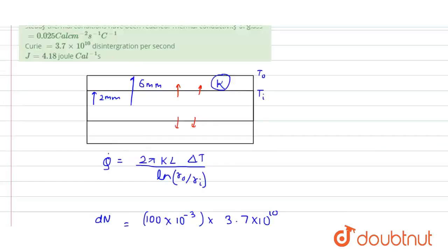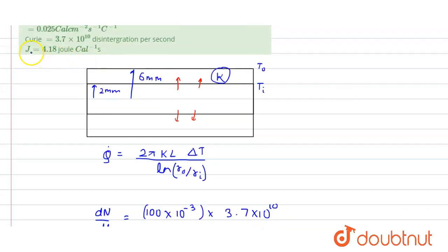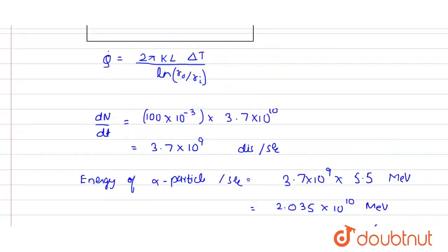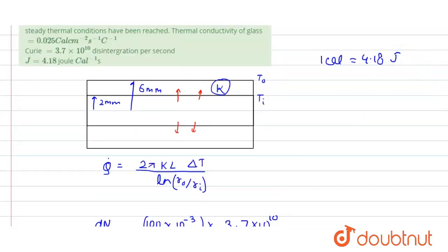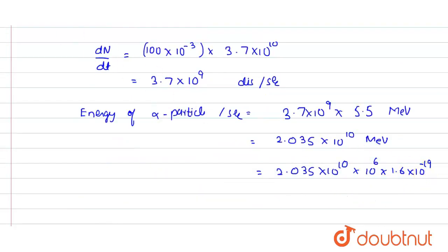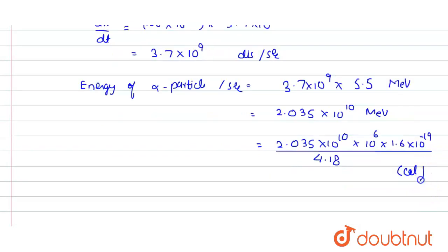Since the thermal conductivity k is given in calories, we convert using 1 calorie = 4.18 joules. Dividing the energy in joules by 4.18 gives the energy in calories per second, which works out to 7.78 × 10⁻⁴ calories per second.